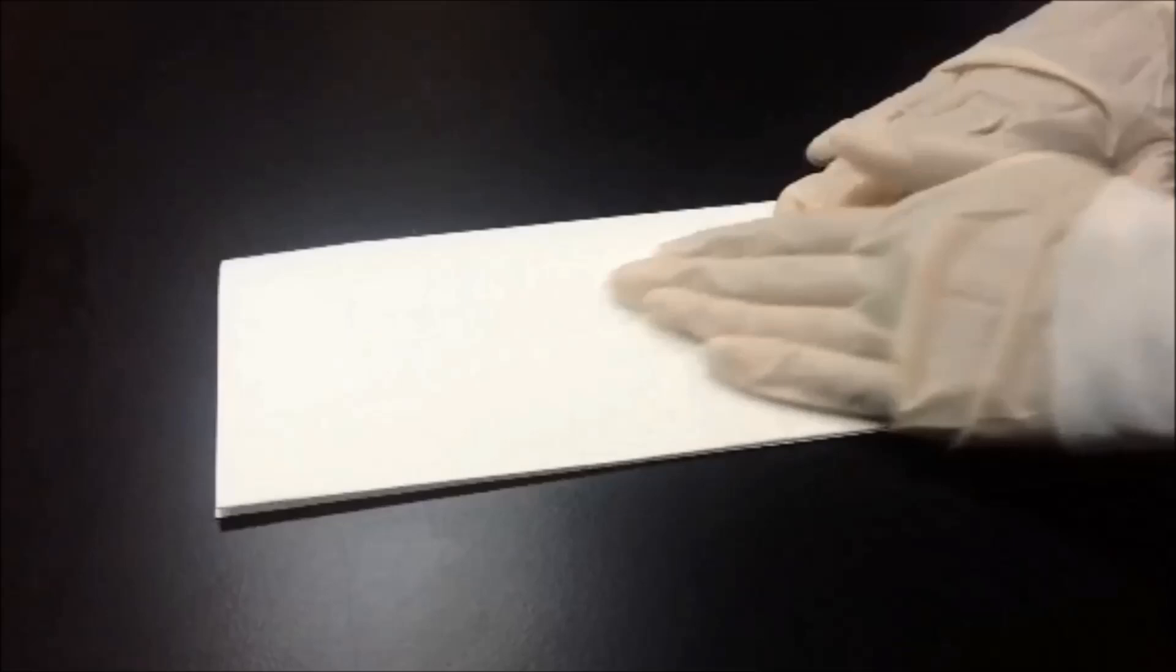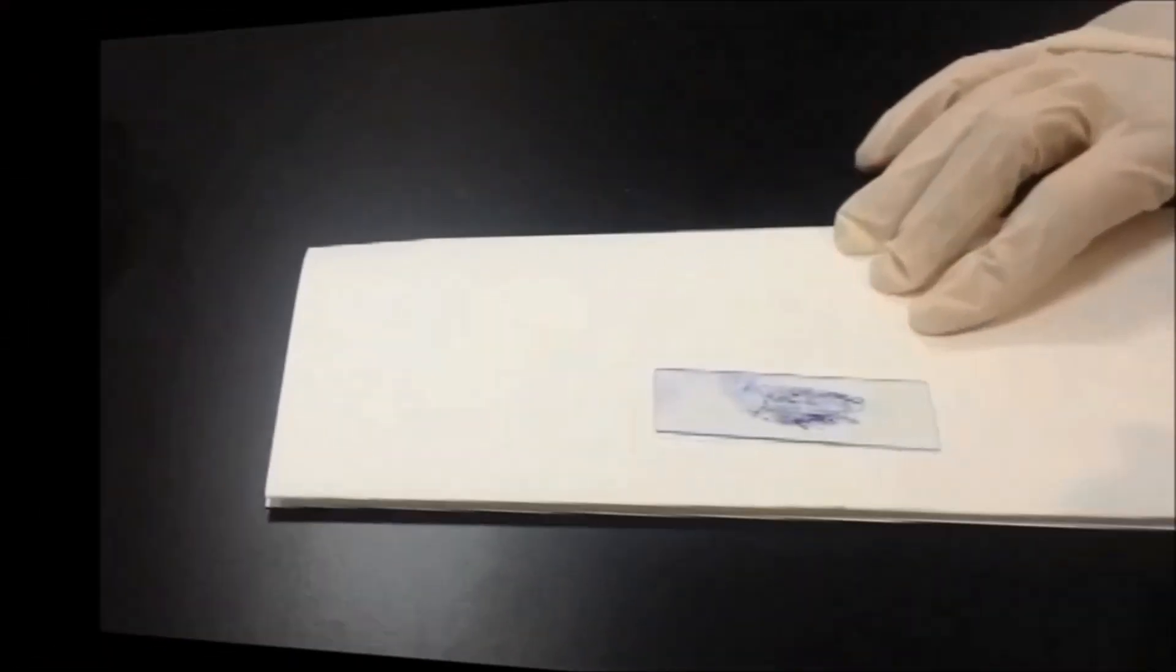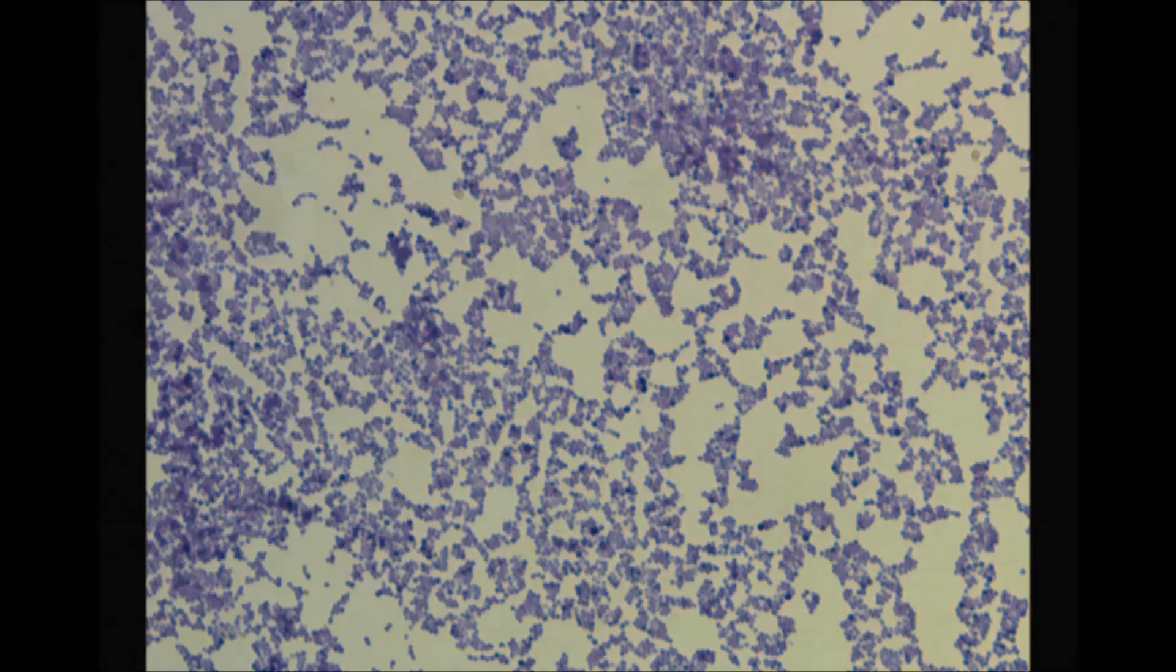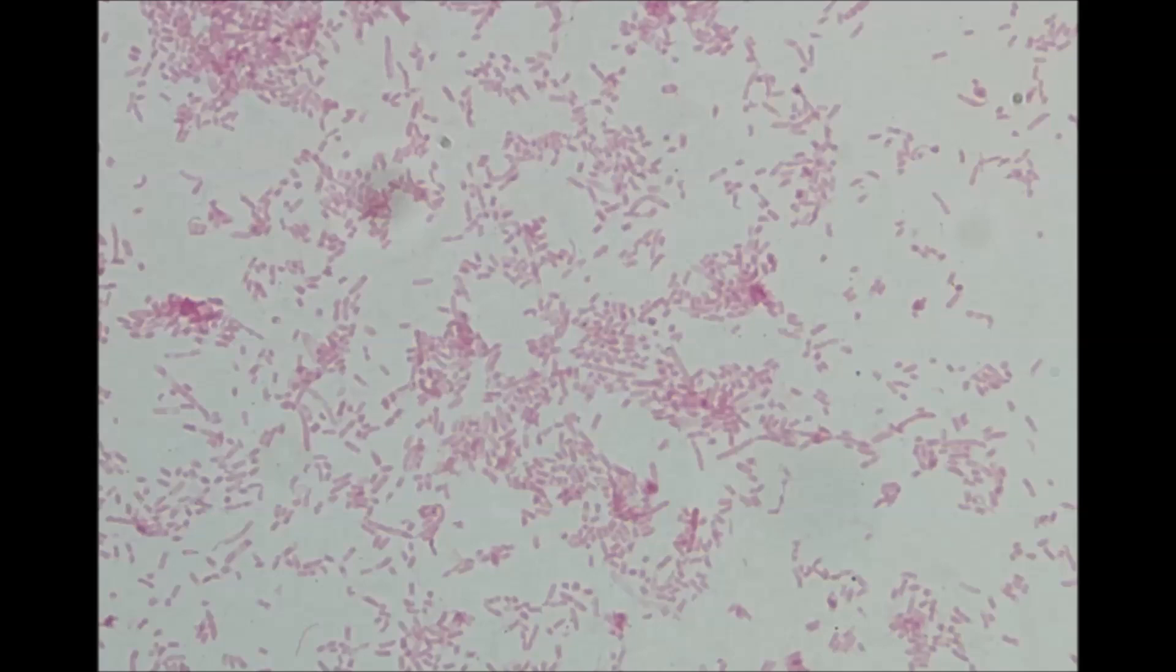Dry the slide gently using the dry blotting paper in your drawer. The slide is now ready to be examined under the microscope. Gram-positive organisms stain purple. Gram-negative organisms stain pink.